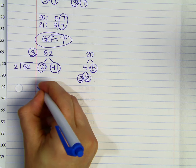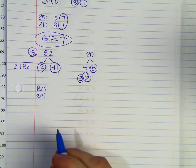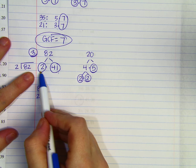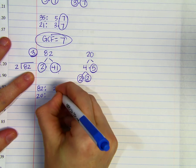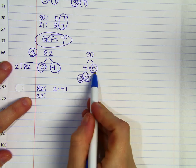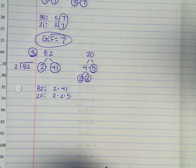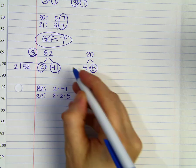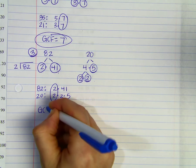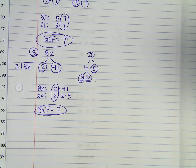Now let's list out the prime factors of both numbers in ascending order — smallest number first. The prime factors of 82 are just 2 and 41, so I'll write it as 2 times 41. The prime factors of 20 are 2, 2, and 5, which is already in ascending order. We want to see what factors are in both lists. Both lists have a 2, and that's it. So the greatest common factor, or GCF, of 82 and 20 is just 2. That's your final answer.